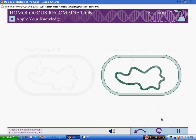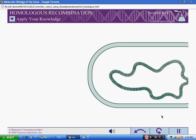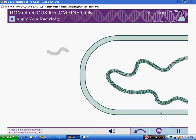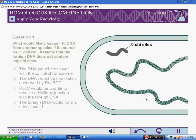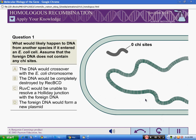Question 1: What would likely happen to DNA from another species if it entered an E. coli cell? Assume that the foreign DNA does not contain any chi-sites.